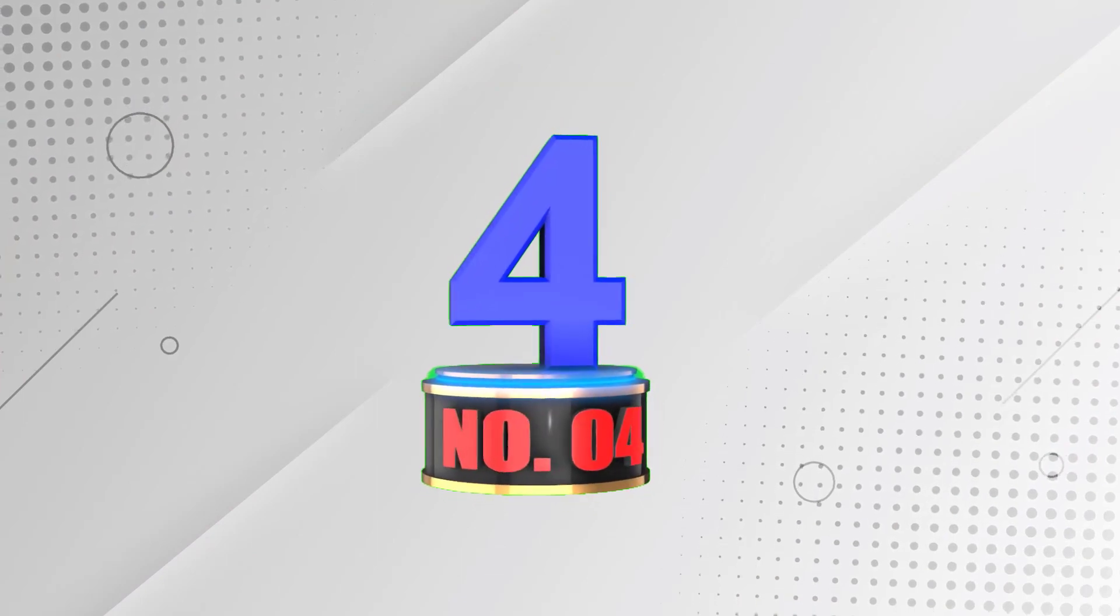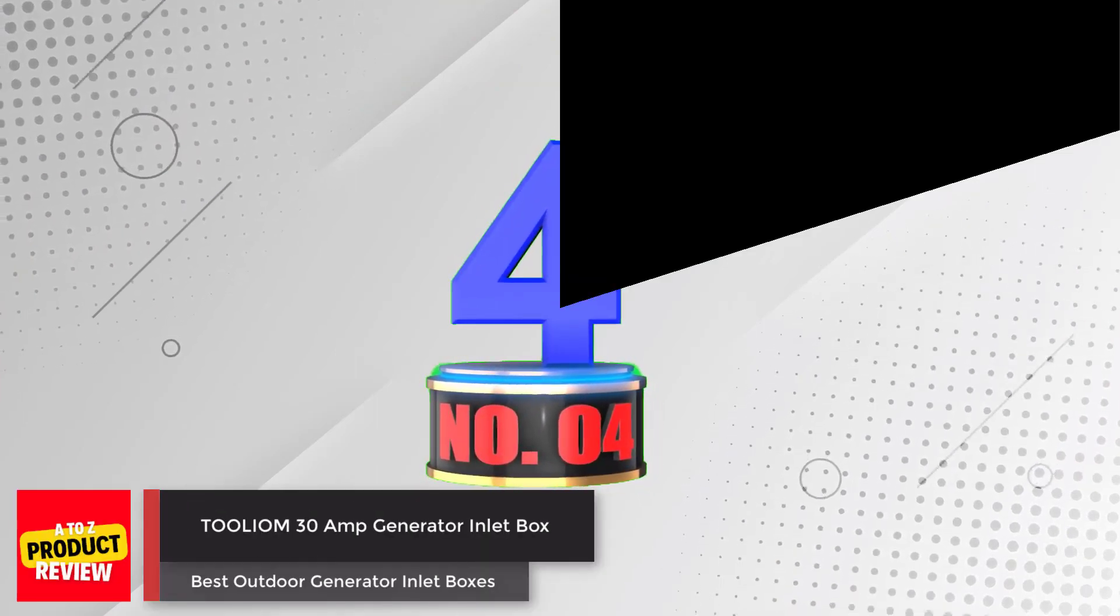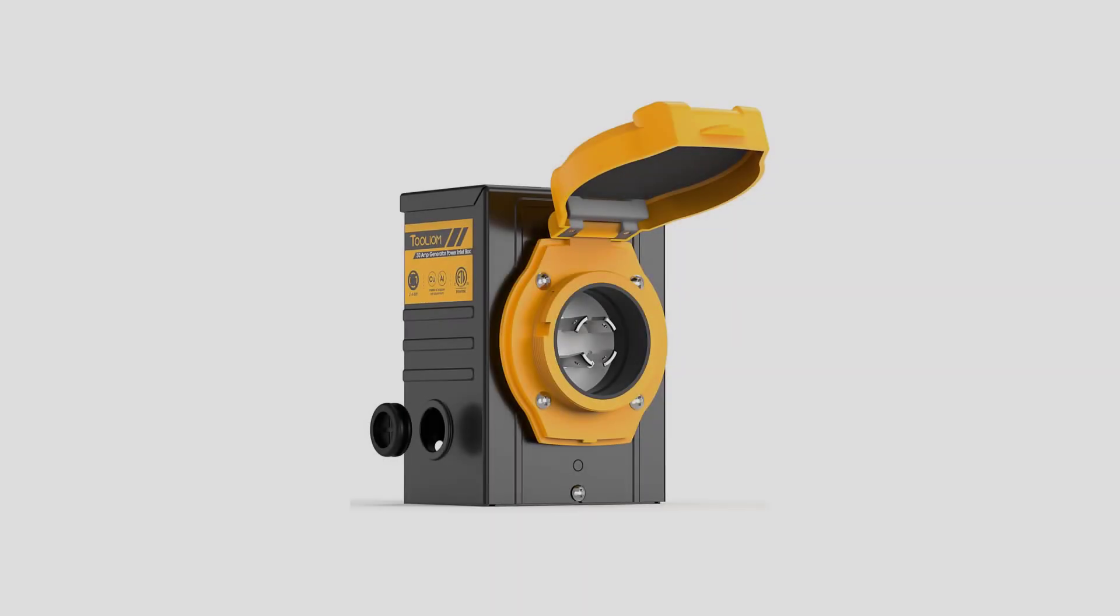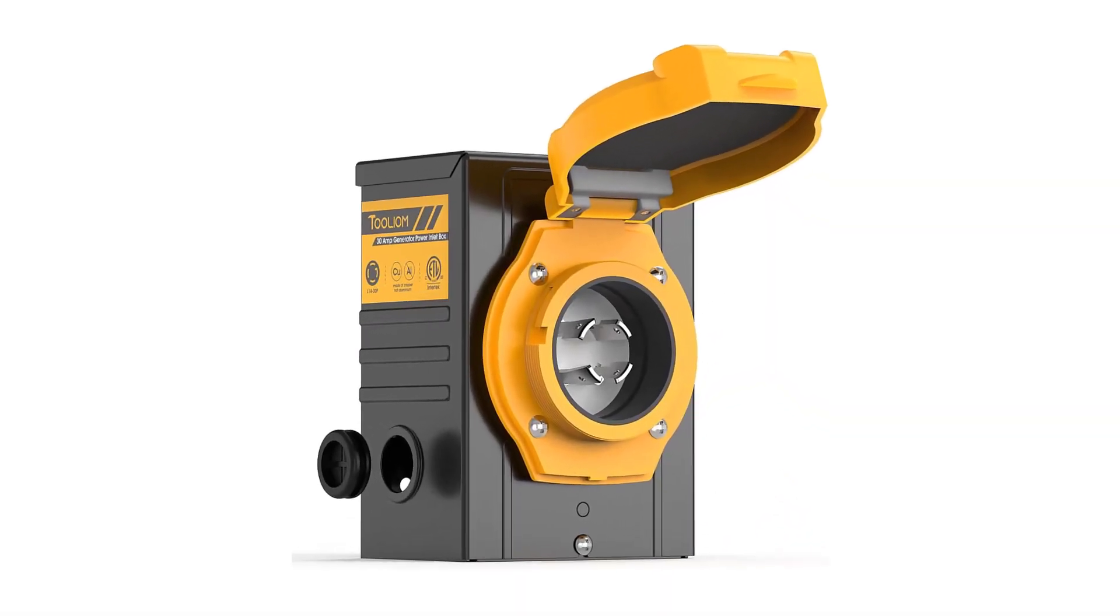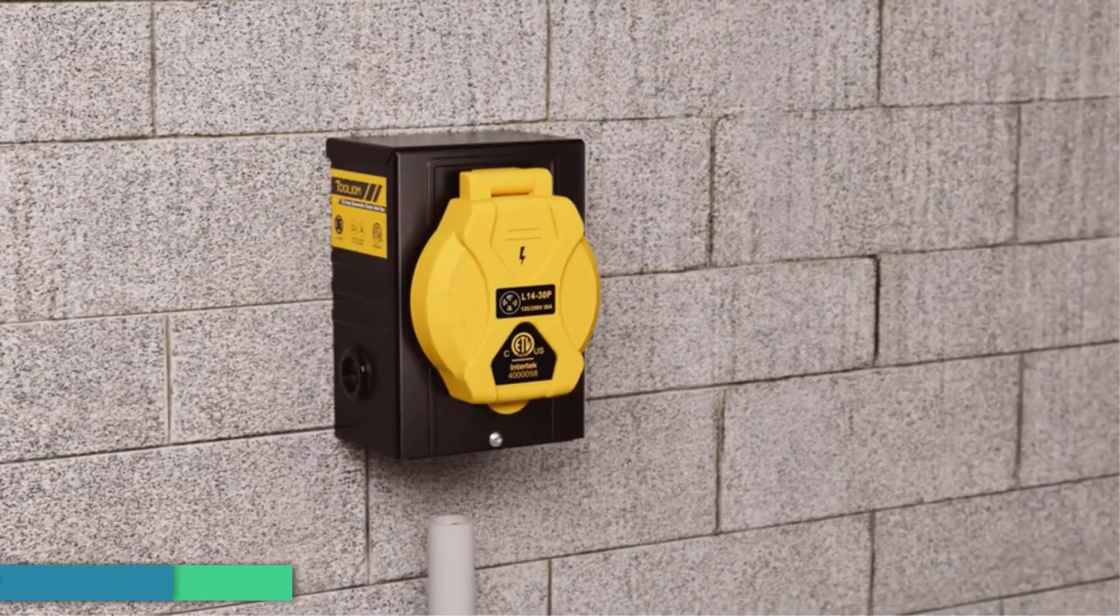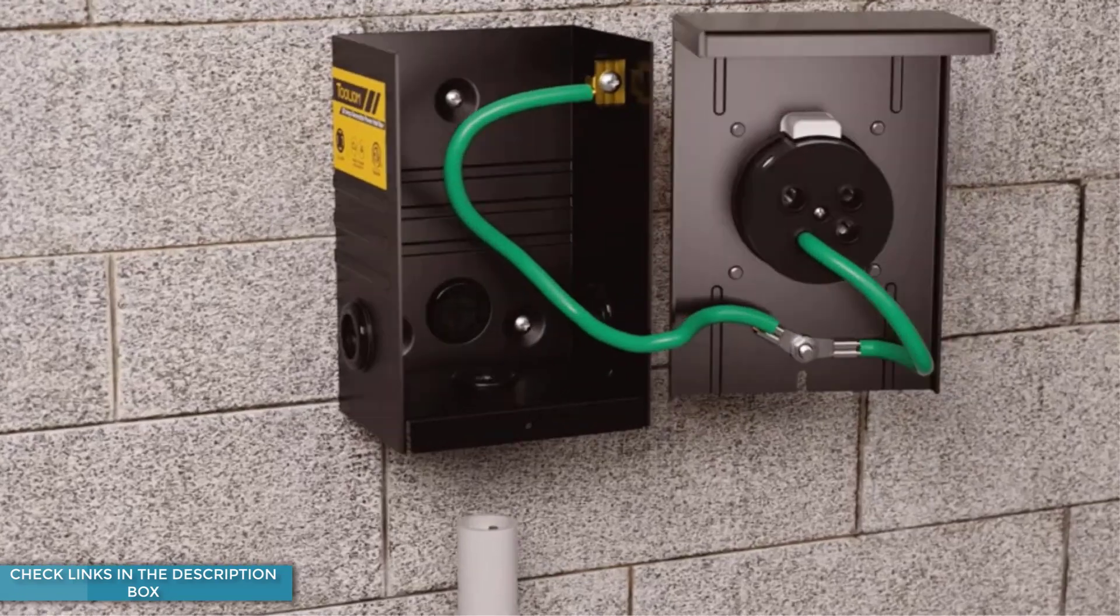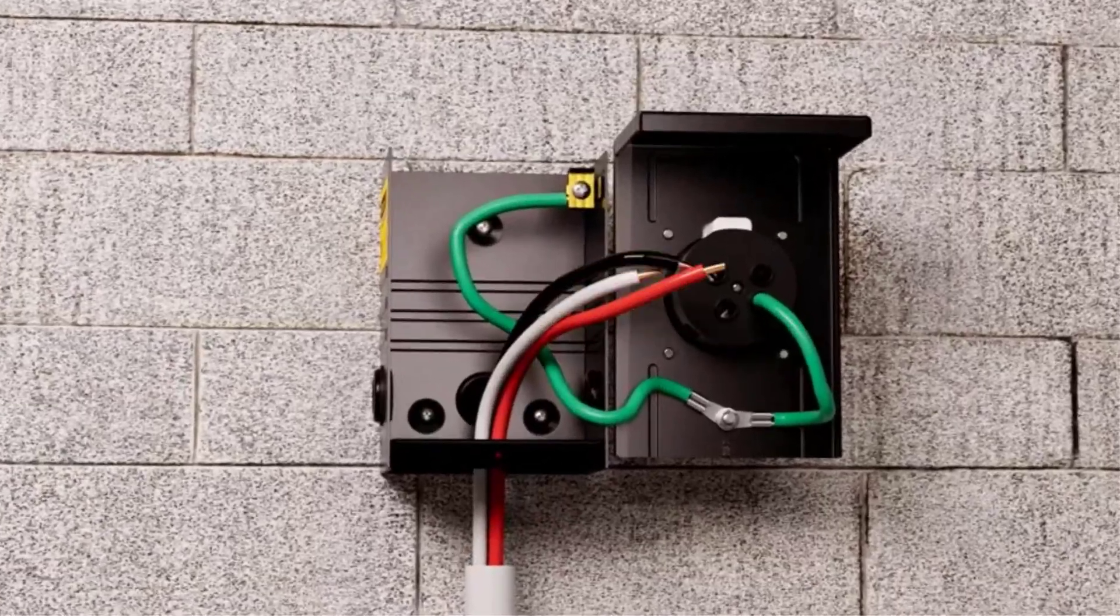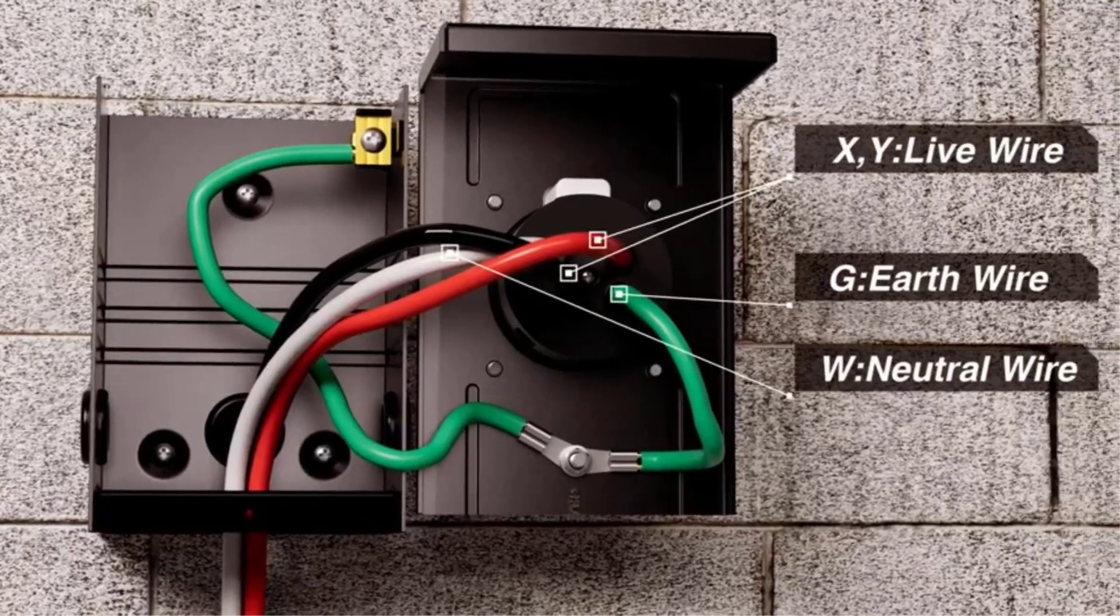Number 4. The Tuilium Generator Inlet Box is a reliable and weatherproof solution for connecting your generator to your home or outdoor power supply. With a 30 Amp NEMA L1430 Twist Lock-Style Power Inlet, this box can handle up to 7,500 W of power, making it suitable for a wide range of generators.